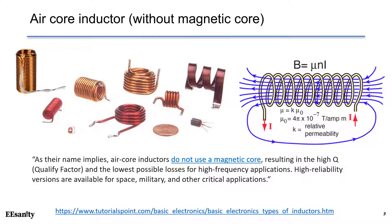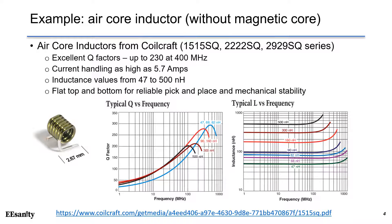Also, it has high reliability for space, military, and other critical applications. However, air-core inductors have lower inductance than ferromagnetic core coils. Here is an example of an air-core inductor from Coil Craft. This is a small surface-mount inductor with excellent Q factor up to 230 at 400 MHz.